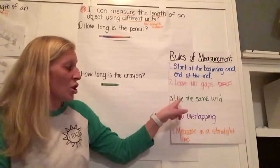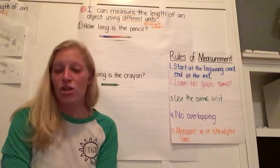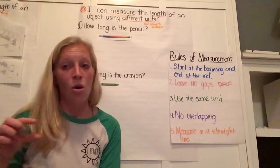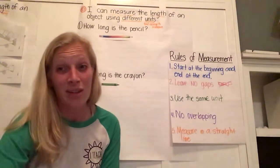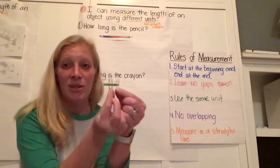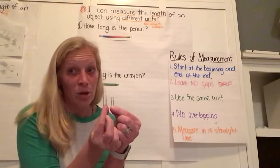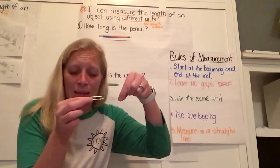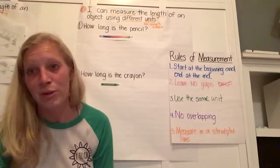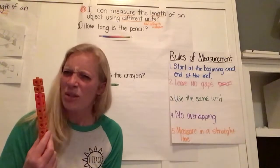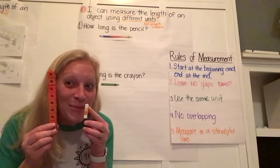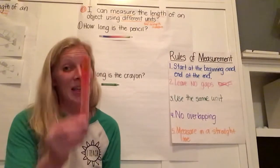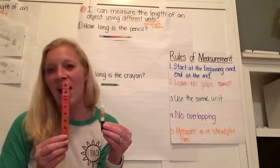I do want to remind you that one of the things that we talk about here is using the same unit. You can measure these all different ways, but make sure that your units are the same that you're using throughout that whole measuring time. If I decide I'm going to use paperclips, but I have two different sizes of paperclips. I've got jumbo paperclips and I have little paperclips. We would not use both of those because they're not the same size.